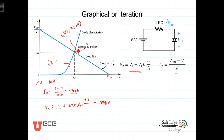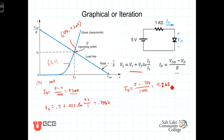Now we use this new voltage of 0.738 V in the load line equation to determine a new current. The new I_D equals (V_DD − V_new) / R, which is (5 − 0.738) / 1000, giving us I_D equal to 4.262 mA.